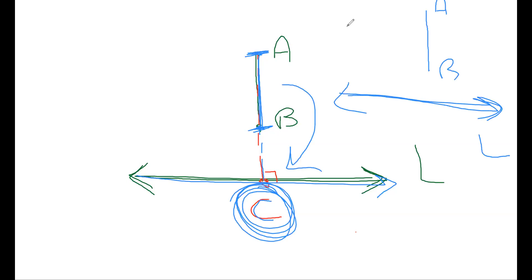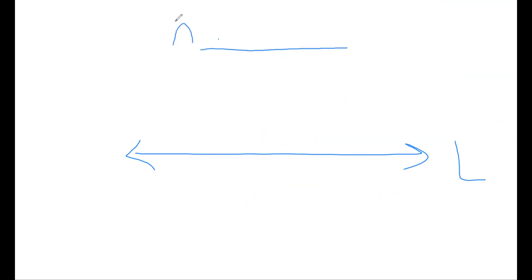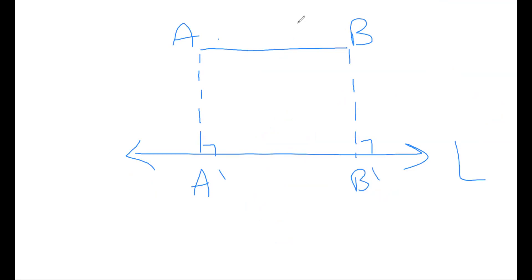The last case: if I have line L and a line segment AB that is parallel to it — not inclined, parallel. When I want the projection of A, it goes down — A dash. B gives B dash. So A dash B dash is the projection of AB on line L.